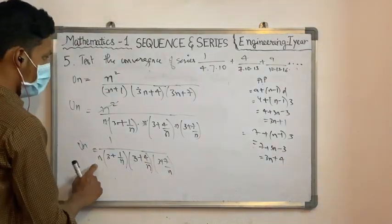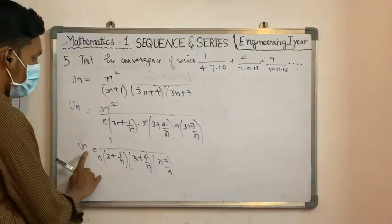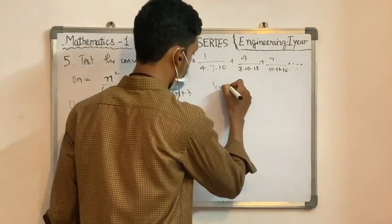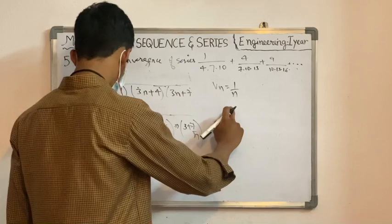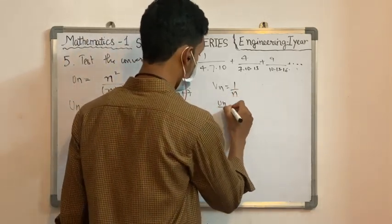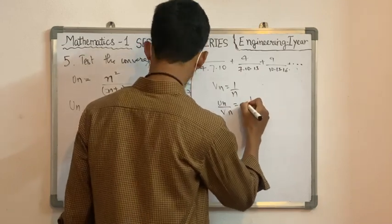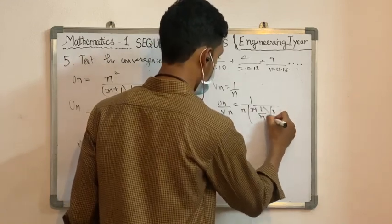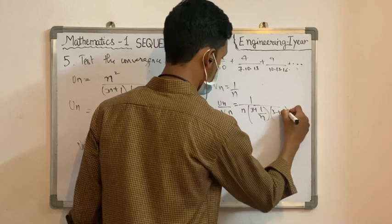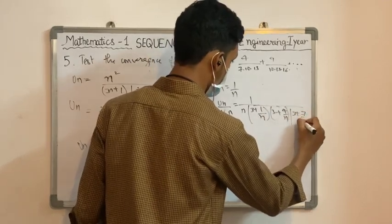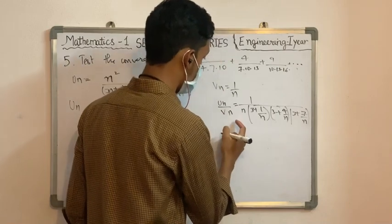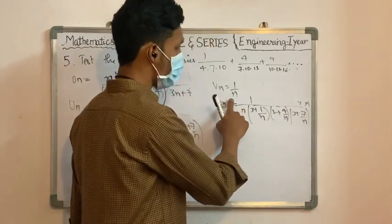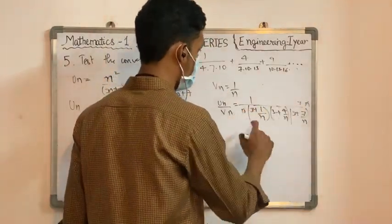We take Vn = 1/n for the limit comparison test. Now computing Un/Vn: Un is of order 1/n, so Un divided by Vn = 1/n gives us a ratio where n cancels, leaving us to evaluate the limit as n tends to infinity.